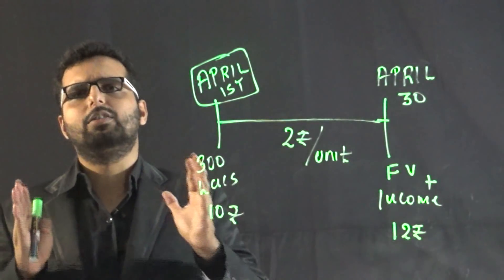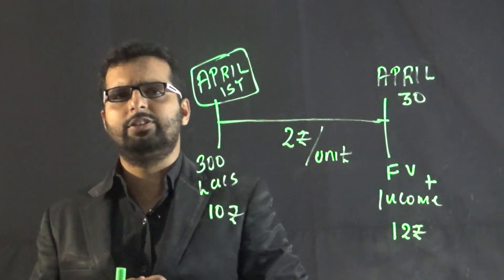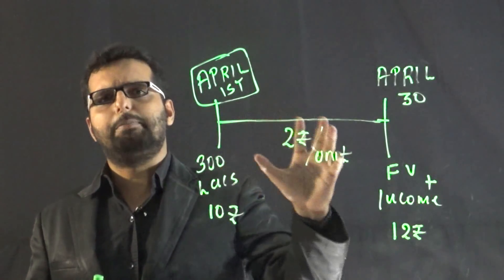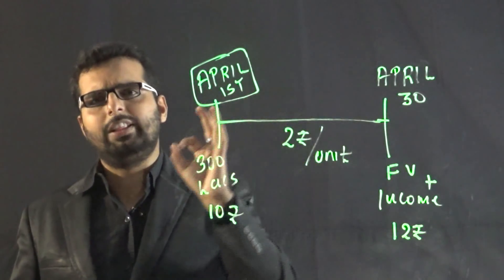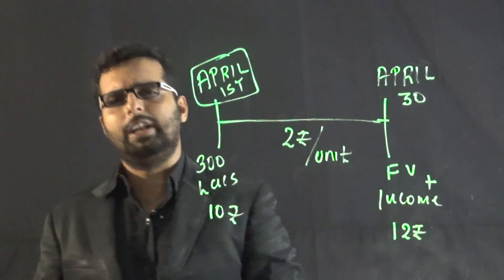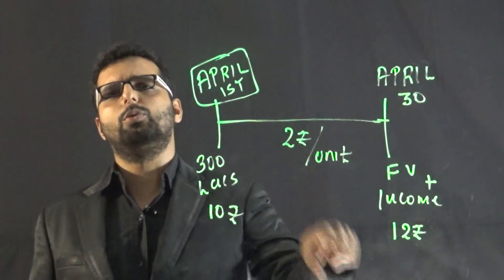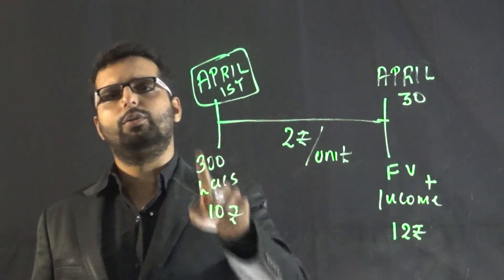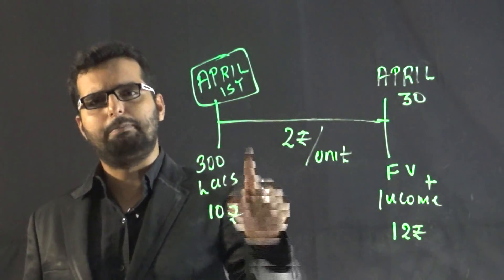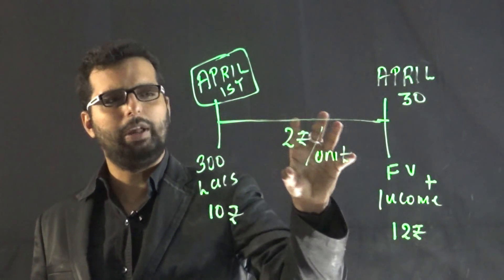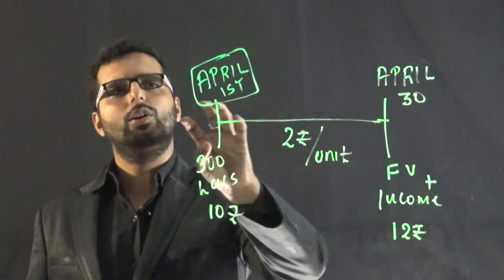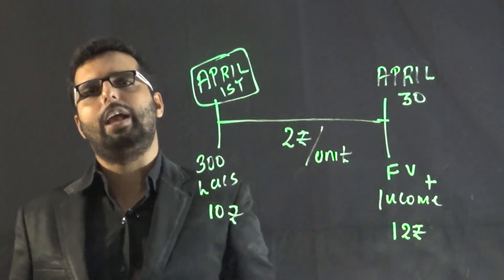As per this concept of dividend equalization, as on April 30th, when the new investors are bringing in some extra money, they are supposed to pay not only the face value of 10 rupees given here, but also 2 rupees which is the income generated during the period of April.